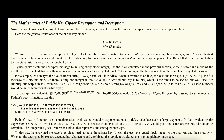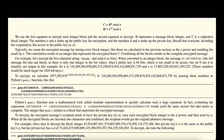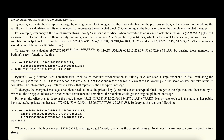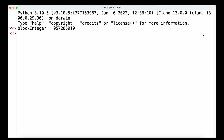To briefly cover the mathematics: c represents a ciphertext block integer and m represents a message block integer. The numbers e and n make up the public key for encryption, and d and n make up the private key. We encrypt by raising each block integer to the e power and taking the result mod n. To do this efficiently we use Python's pow function, passing the block integer and the public key numbers.